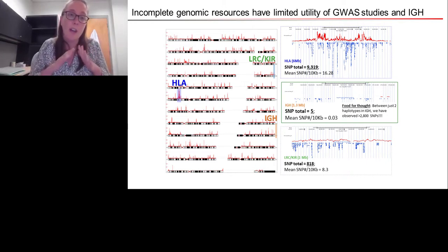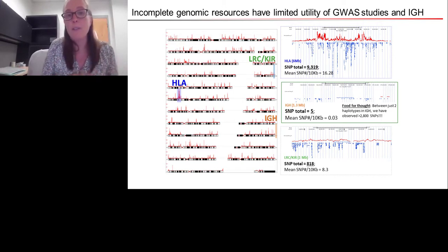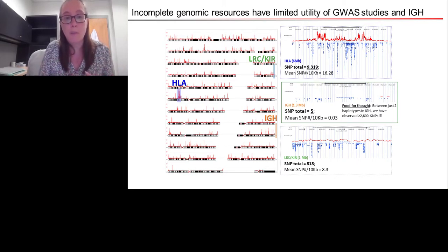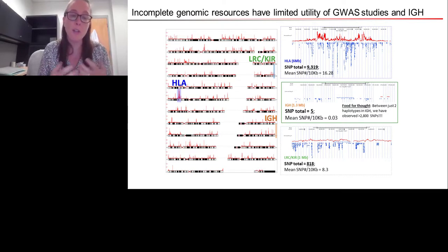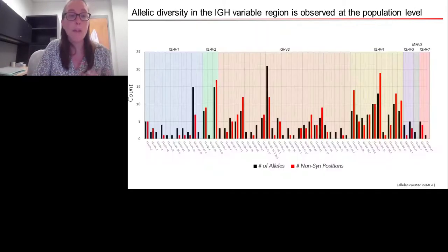Looking at microarray mapping of oligos across all 23 human chromosomes, the HLA region has many known variants — over 9,000 SNPs are represented in some immune arrays. Even the KIR region, responsible for NK cell recognition and activity, has over 800 SNPs represented in immune arrays. Whereas if you look at IGH, there are only five. Between just those two reference haplotypes, we observed over 2,500 SNPs, so with only five SNPs in arrays, you really lose the ability to associate variants in this locus with disease in large GWAS studies. But we know the allelic diversity is there.